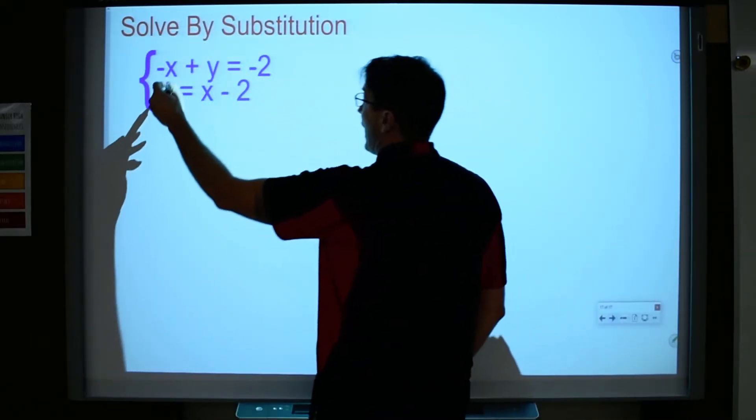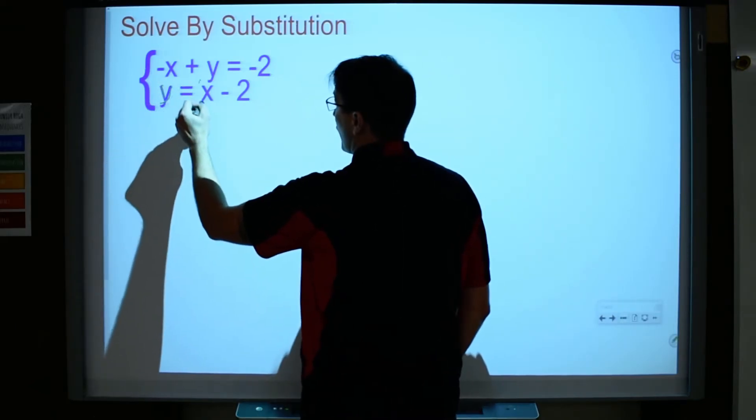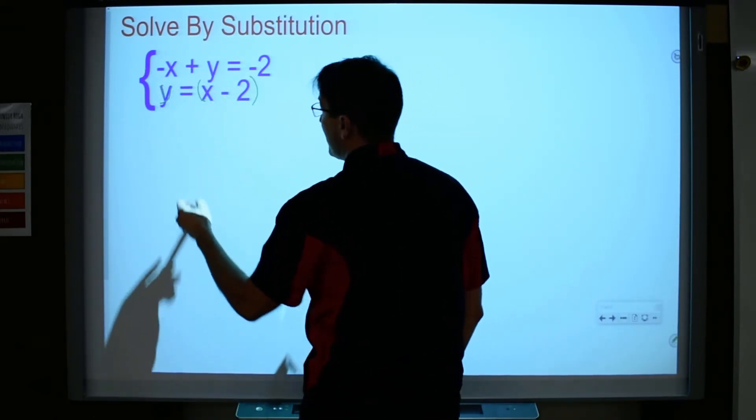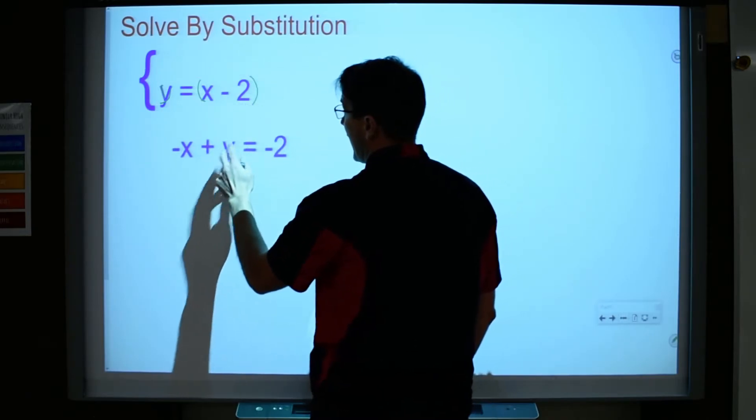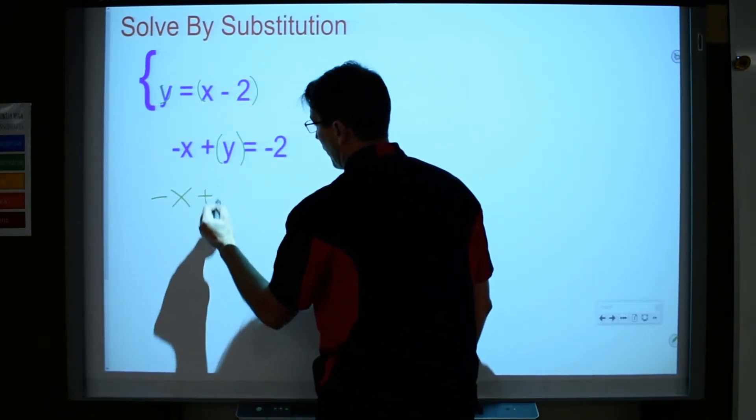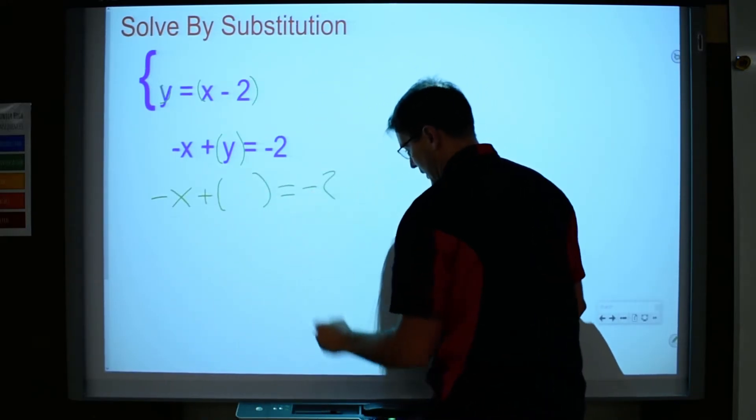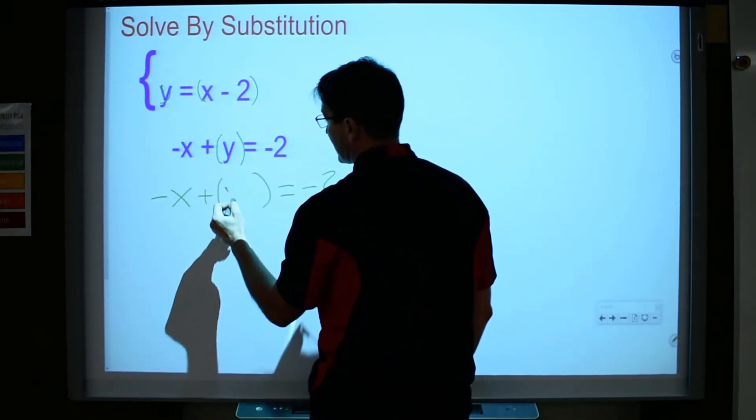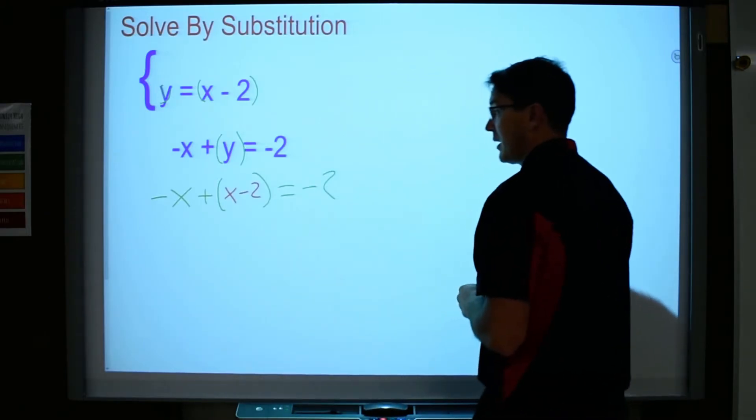I look at the two equations. The bottom one, I have y alone, so I'm going to go ahead and substitute y into the equation above. That means I'm taking this equation, and wherever I see a y, I'm going to substitute. So I go negative x plus parentheses equals negative 2. I'm substituting the value x minus 2. And I go, okay.